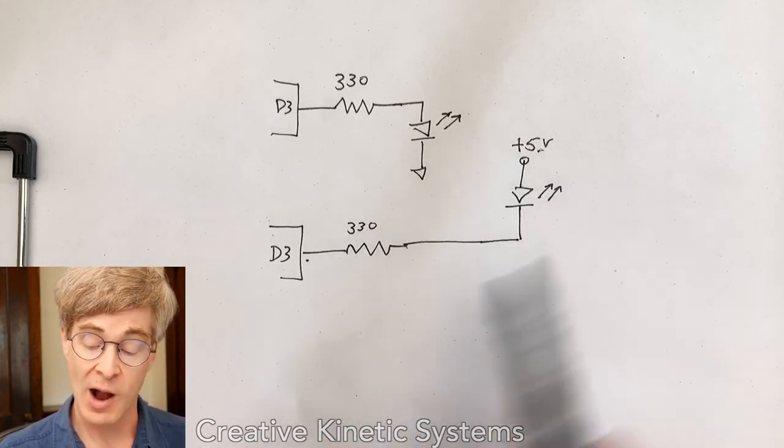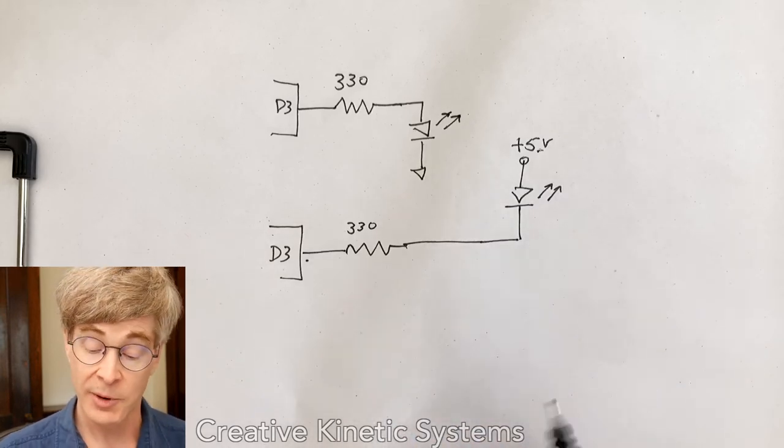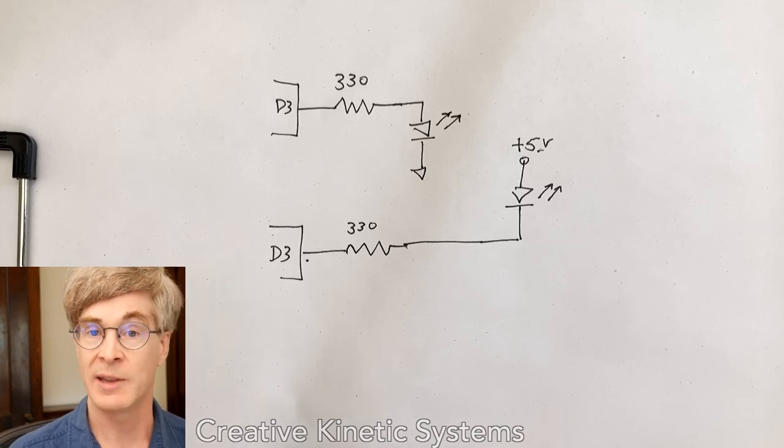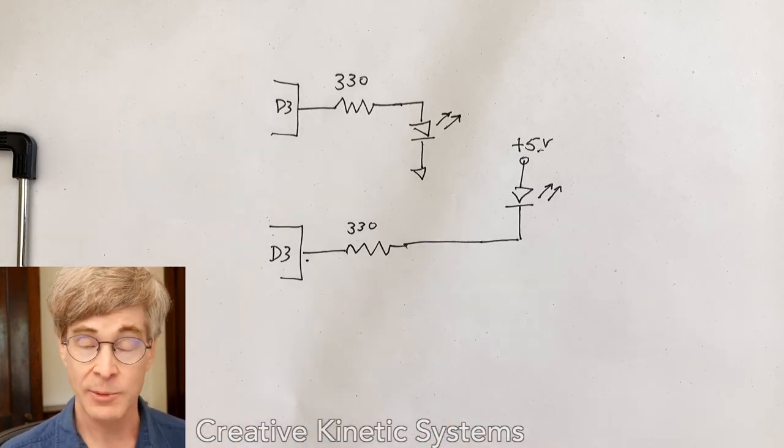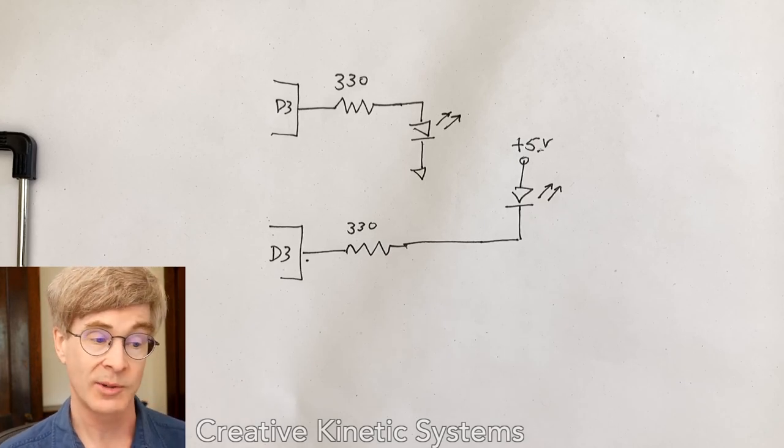then we have a voltage differential across our circuit, current will flow through the LED and the resistor, and they'll light up. So in the first case, a high means on. In the second case, a high means off. And both of these are equally valid solutions. You'll very commonly see each of them in the kind of common circuits that we use.